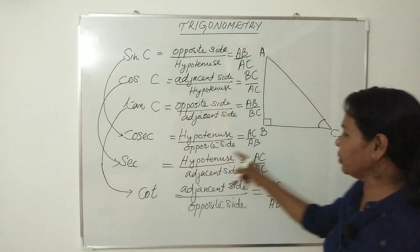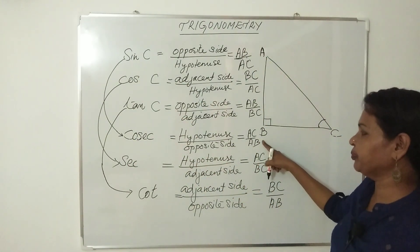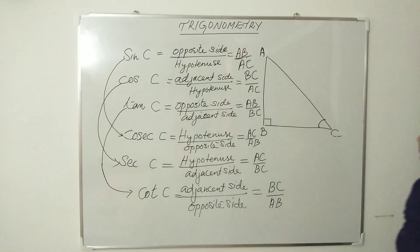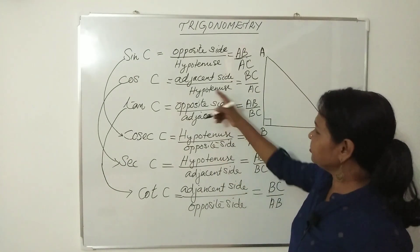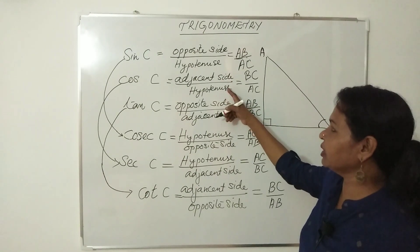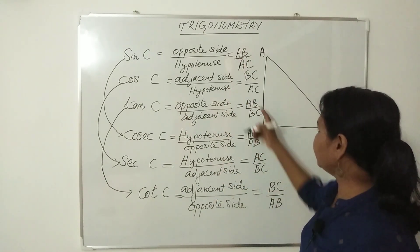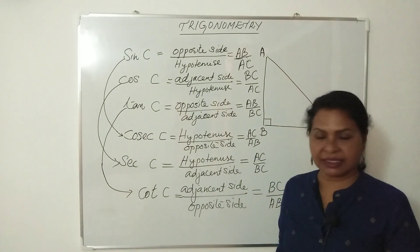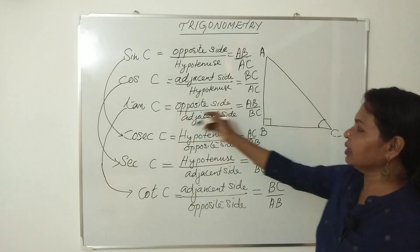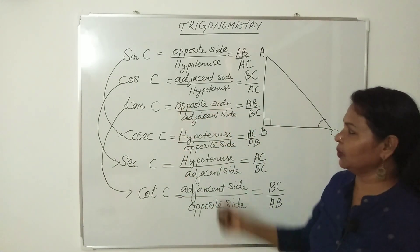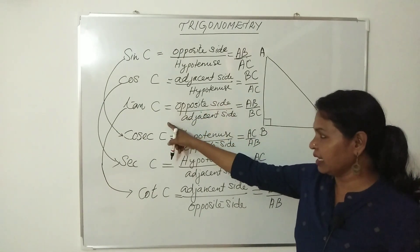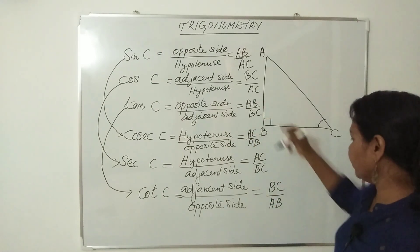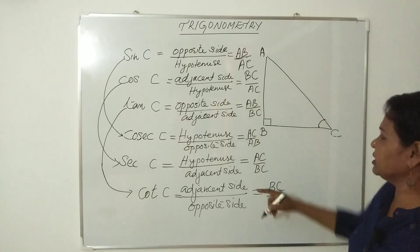Cosec C is the reciprocal of sin C, so it equals AC divided by AB. Sec C is the reciprocal of cos C: hypotenuse divided by adjacent side, that is AC divided by BC. Cot C is the reciprocal of tan C: adjacent side divided by opposite side, that is BC divided by AB.